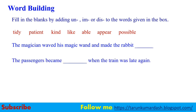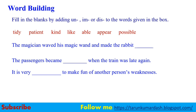Next sentence: the magician waved his magic wand and made the rabbit disappear. The passengers became impatient when the train was late again. It is very unkind to make fun of another person's weakness.